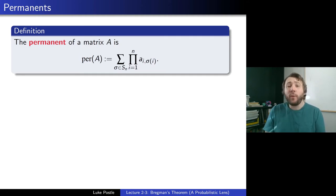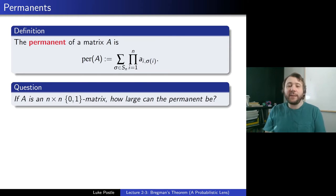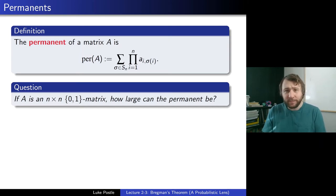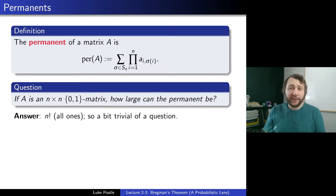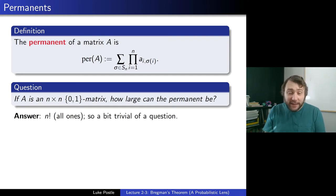If the entries of A are non-negative, the permanent is also non-negative. So what is the natural question? If A is an n×n 0-1 matrix, how large can the permanent be? The answer is n factorial — you take all 1s. If you make every entry 1, then each permutation contributes a product of 1, giving n! total since there are n! permutations. So this is a bit of a trivial question.